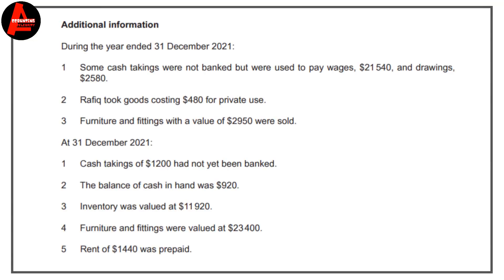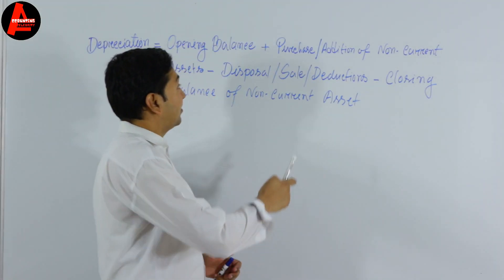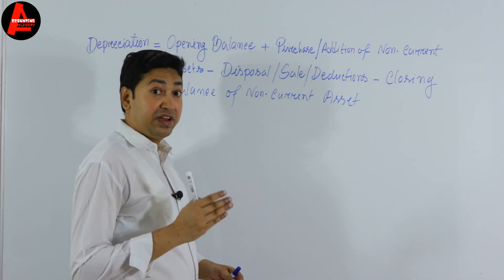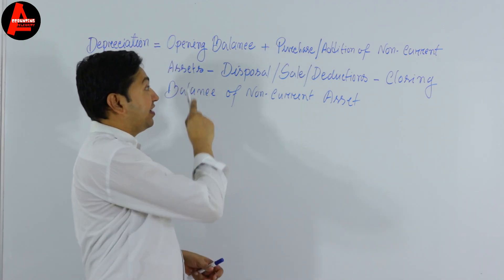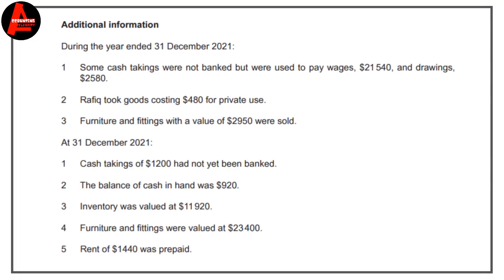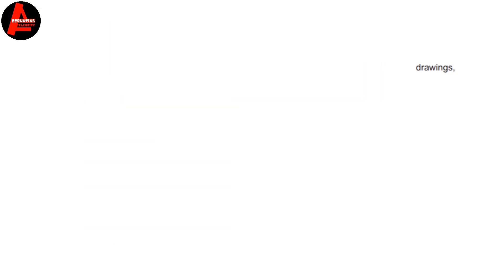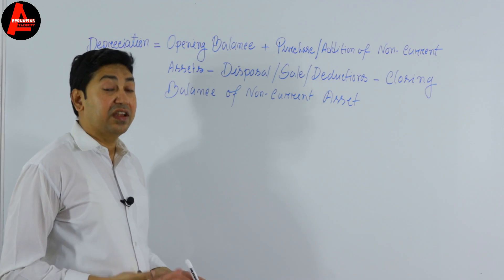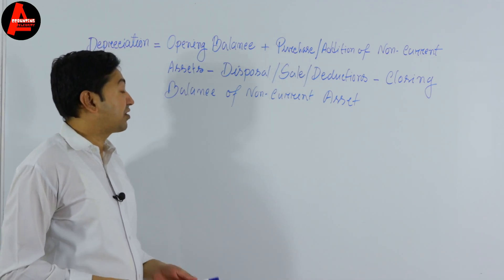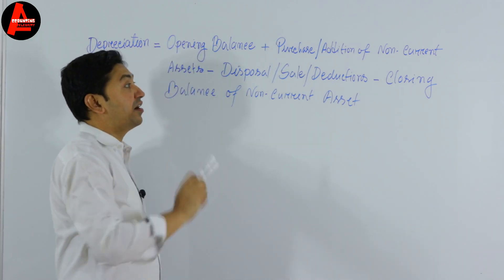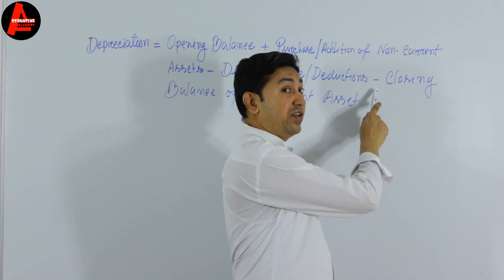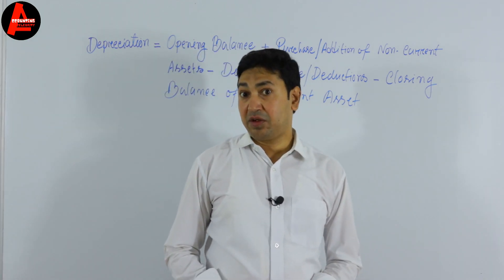Number three: furniture and fittings with a value of $2,950 were sold. This is the disposal amount, which will be deducted. Number four: furniture and fittings were valued at $23,400 at the end of the period. This is the closing balance of the non-current asset, which we will subtract in the formula.